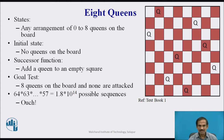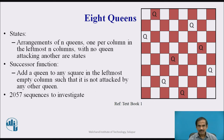This would be too much — a combinatorial explosion. So we generalize to n queens instead of 8, placing one per column in the leftmost n columns with no queens attacking each other. The successor function adds a queen to any square in the leftmost empty column such that it is not attacked by any other queen, giving only 2,057 total sequences to investigate.